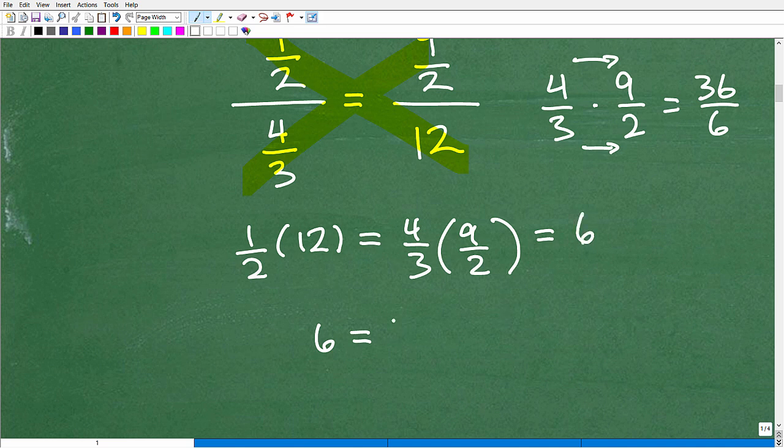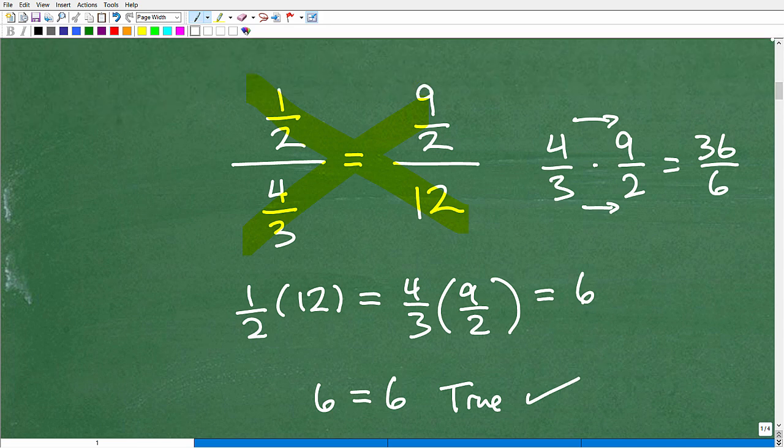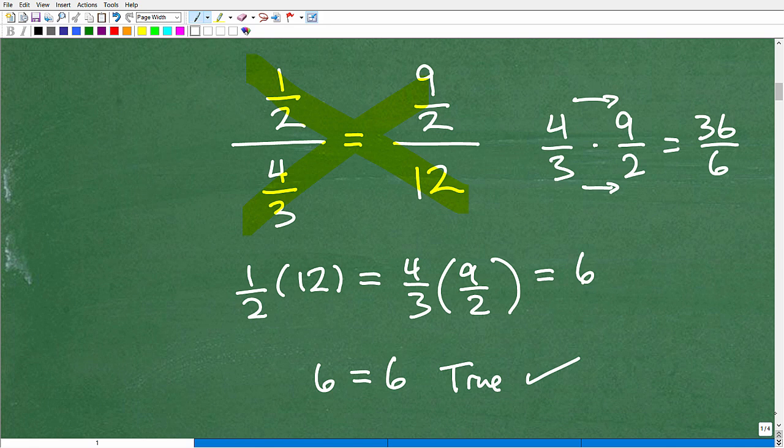So it looks like we've got a 6 on both sides of the equation. That's a true statement. So this checks out as a proportion. And that would be your justification. So why is this a proportion? Because the cross-products are true or the means equal the extremes.